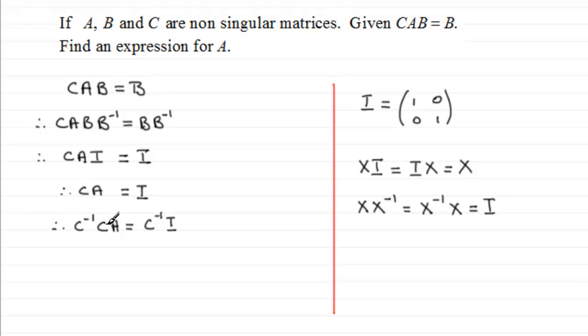So the inverse of C times C gives us the identity matrix. So therefore we have I times A equals, and if we multiply any matrix by the identity here, it leaves it unchanged. We just get back the inverse of C. And the identity matrix times A is just going to be A. It leaves it unchanged. So A equals the inverse of C.